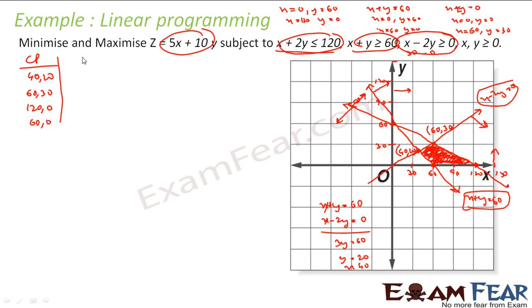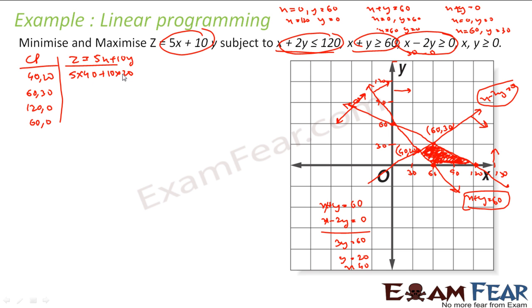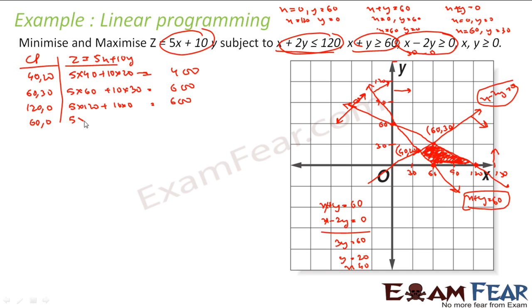So I have 4 corner points. For all these 4 points, let me find Z = 5x + 10y. At (40, 20): Z = 5×40 + 10×20 = 200 + 200 = 400. At (60, 30): Z = 5×60 + 10×30 = 300 + 300 = 600. At (120, 0): Z = 5×120 + 10×0 = 600. At (60, 0): Z = 5×60 + 0 = 300. So the minimum is 300 and the maximum is 600.